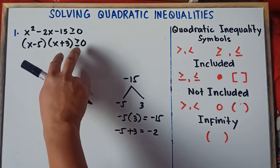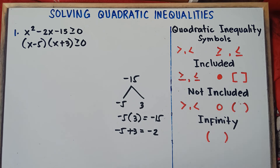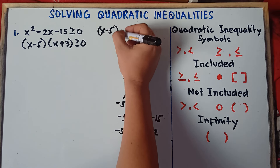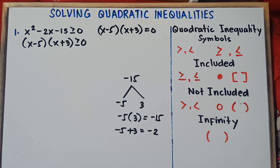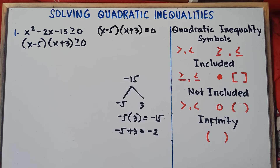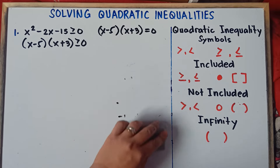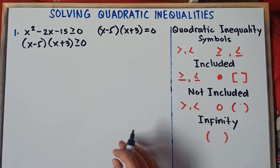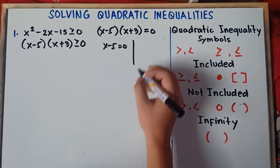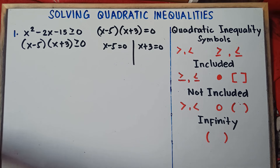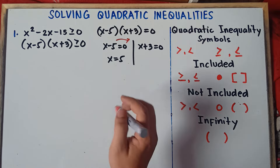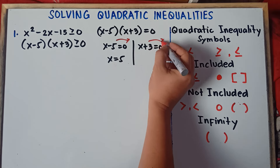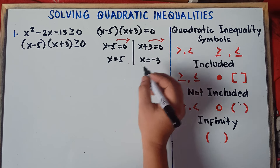The second step is to equate this to zero to get the critical points. So (x minus 5)(x plus 3) equals zero. We need to get the x values to locate them on the number line — we call those critical points. So x minus 5 equals zero gives x equals positive 5 (transposing negative 5 becomes positive 5). And x plus 3 equals zero gives x equals negative 3. These are our critical points.